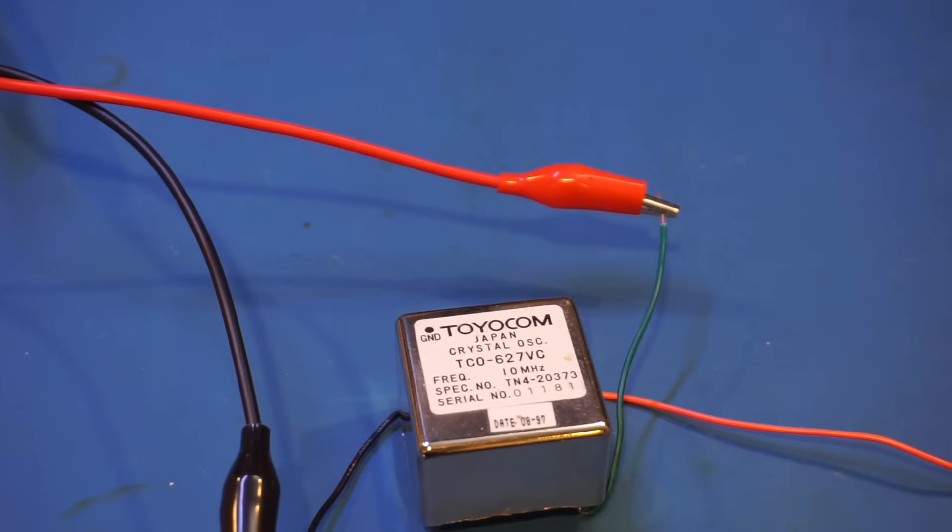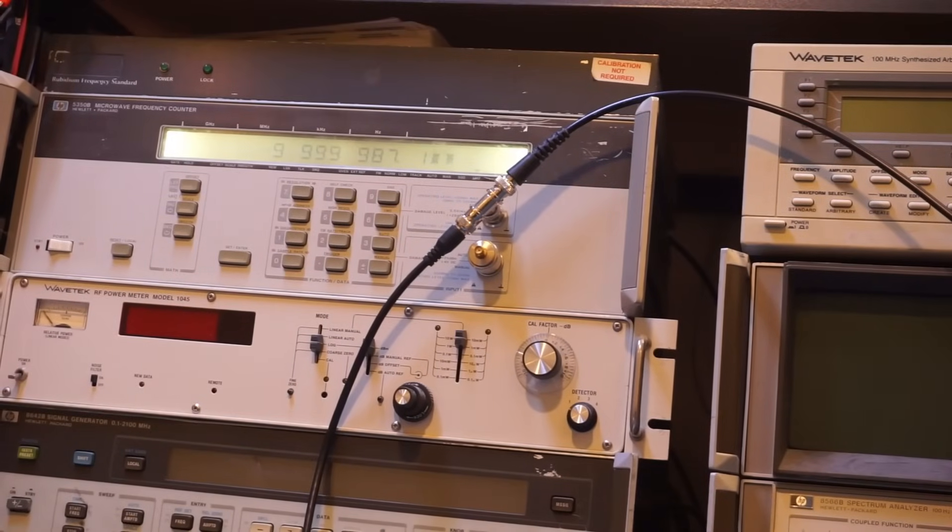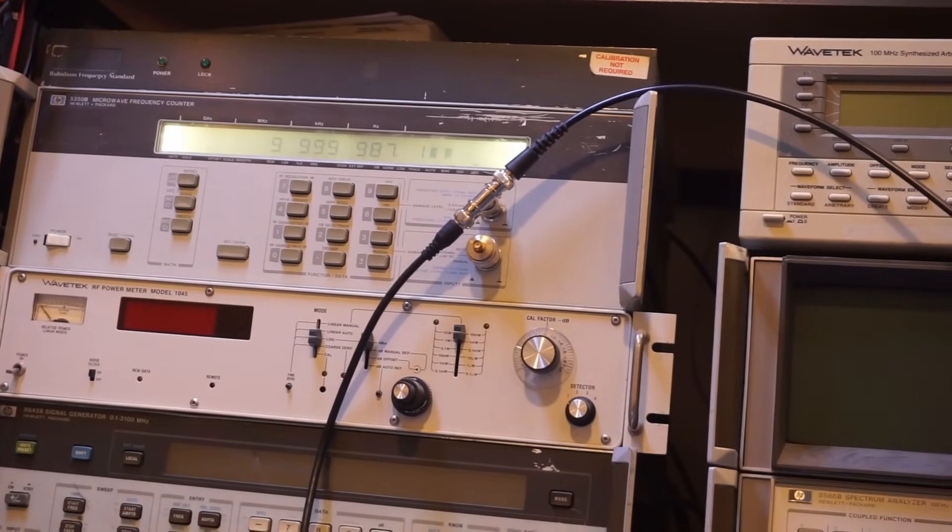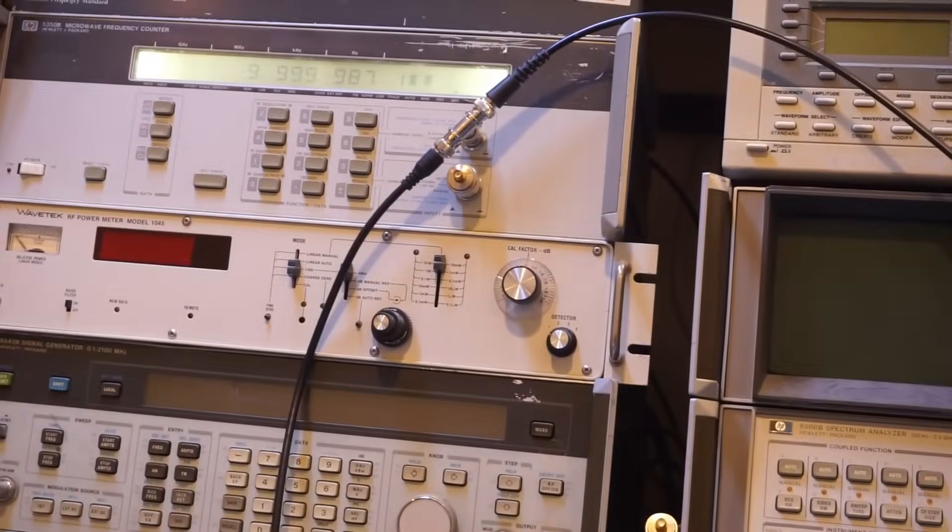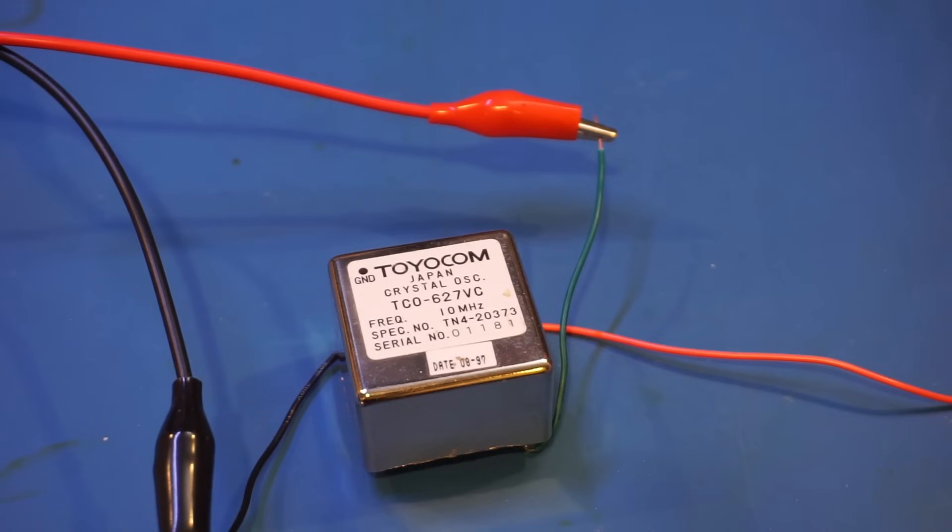More importantly, the output is very stable. If I touch the case, you can see it's 87.1, and the output barely changes. Now my hand is on it and the frequency remains 87.1. This is somewhat to be expected, as the oven temperature is precisely controlled. Let me cut open this crystal oscillator and take a look inside.